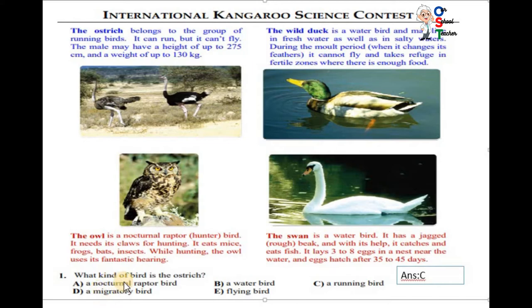What kind of bird is the ostrich? A nocturnal raptor bird? No, this is owl. A water bird? No, this is swan and duck. A running bird? Yes, you can see it can run. So ostrich is a running bird. Answer C is correct. Read other options as well. Is it a migratory bird? Is it a flying bird? No, it cannot fly.